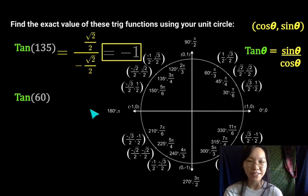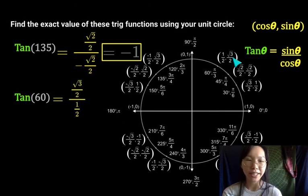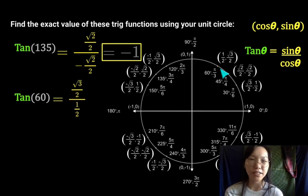For tangent of 60, notice 60 degrees is right here and the sine value is square root of 3 over 2. And the cosine value is 1 half.